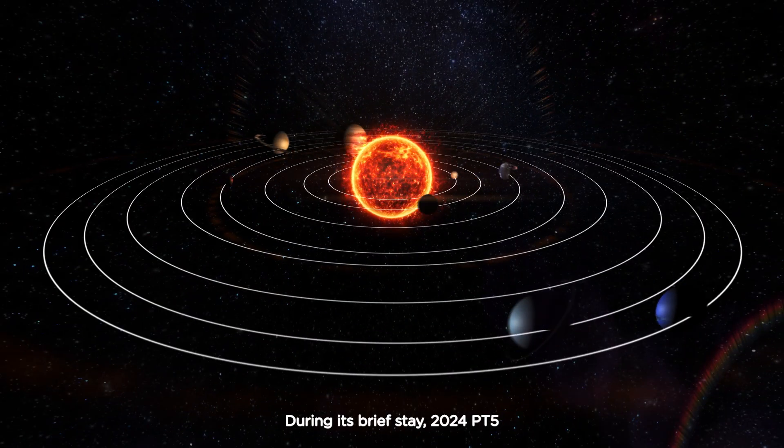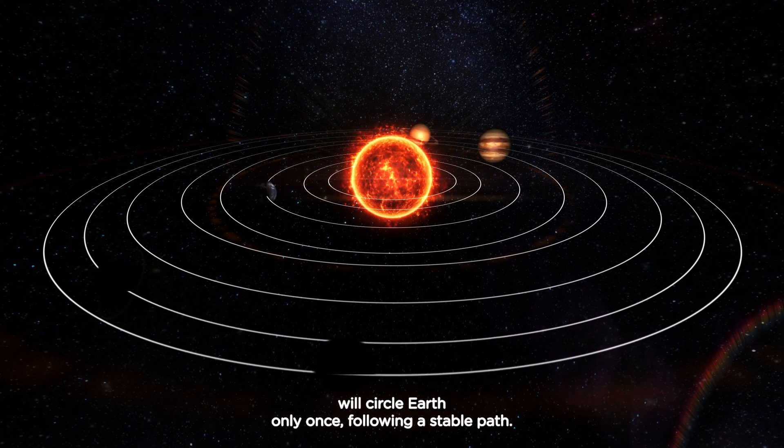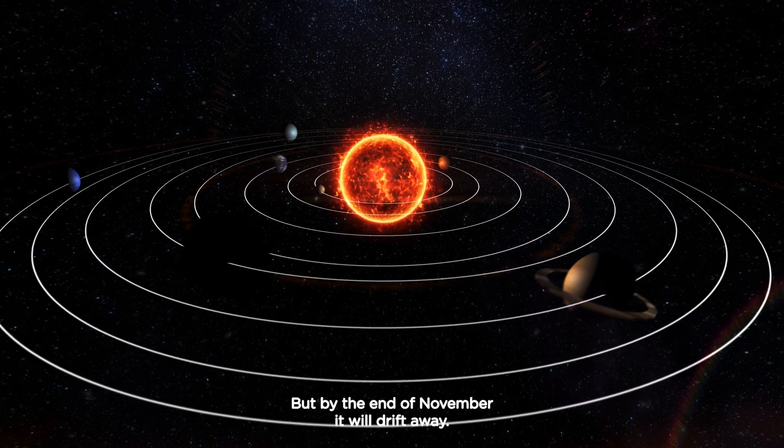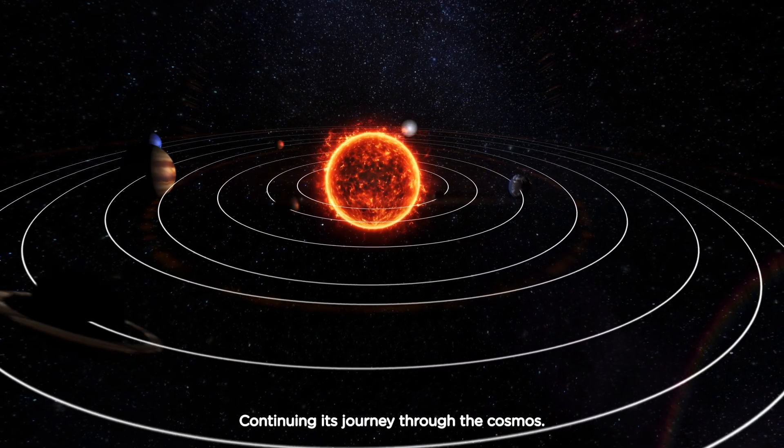During its brief stay, 2024PT5 will circle Earth only once, following a stable path. But by the end of November, it will drift away, continuing its journey through the cosmos.